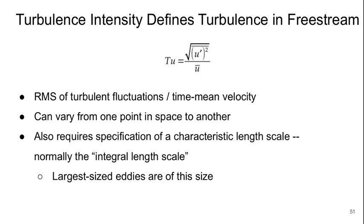We can use a quantity called the turbulence intensity, which is dimensionless, to define the level of turbulence in the free stream. Basically, this is the root mean square of the turbulent fluctuations divided by the time average velocity. And if you've seen turbulence kinetic energy, this is just the square root of that. This can vary from one point to another in space. It also requires a specification of a characteristic length scale, normally what we call the integral length scale, which is basically just the size of the largest turbulent vortices or eddies in the flow.